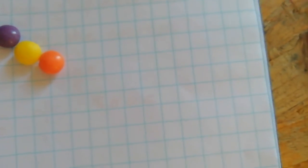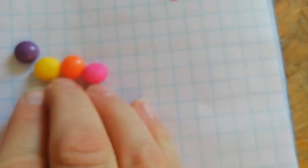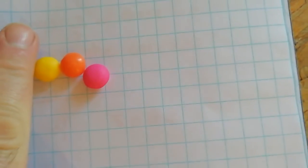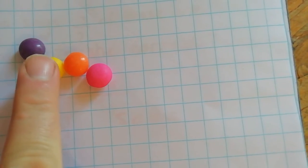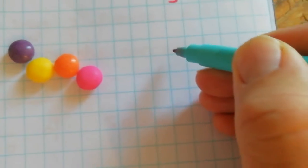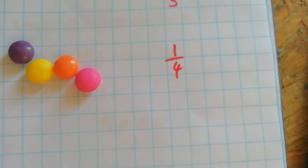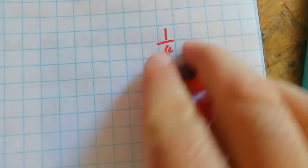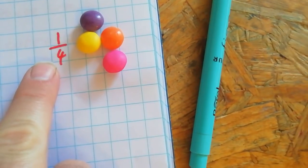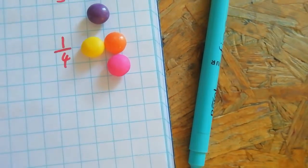What about if I add some more? Let's add another one. What fraction of these are purple? Again I've got one out of one, two, three, four. So this time I must have a quarter of the sweets are purple. I can talk about this the other way around and say, well, a quarter of four is going to be one.